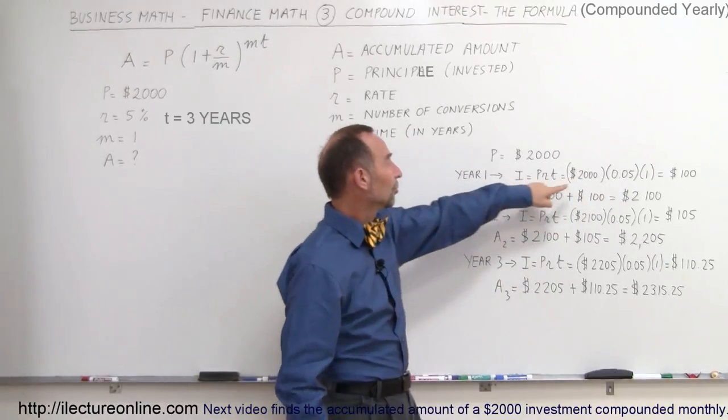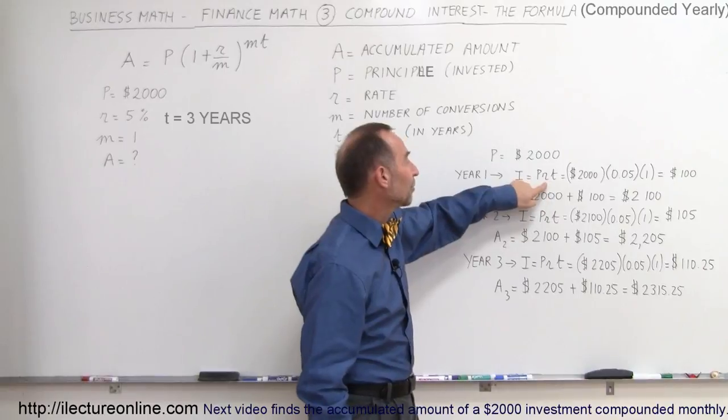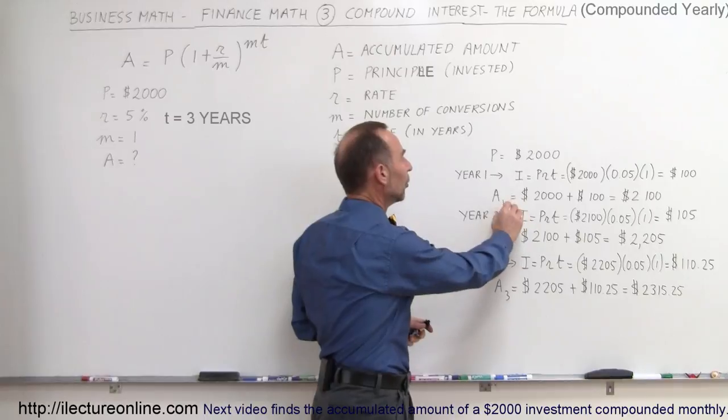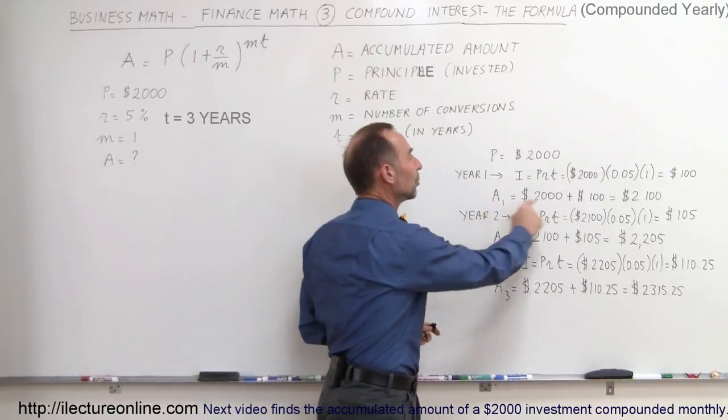then what you do is put your $2,000 down at a rate of 5%. For one year, you earn $100 of interest. You then add that to the original principal, so the amount accumulated after one year would be $2,100.